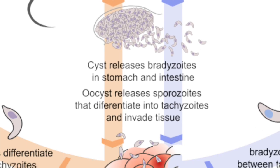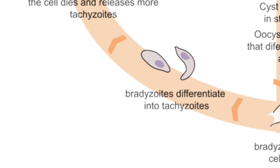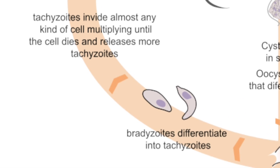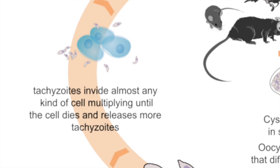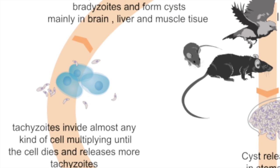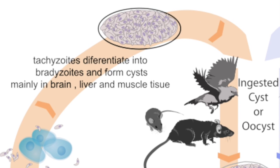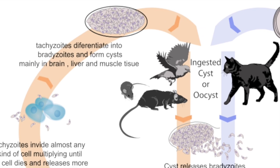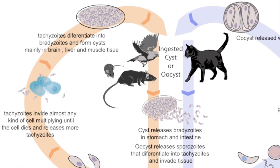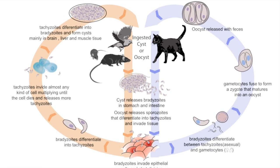In other mammals, after bradyzoites start division, they differentiate into tachyzoites. The tachyzoites will invade almost any cell, with invaded cells releasing more. The tachyzoites will then differentiate into bradyzoites and form cysts in the brain, liver, and muscle tissues. These cysts remain dormant within the host forever, except for possible reactivation when the human immune system is suppressed.